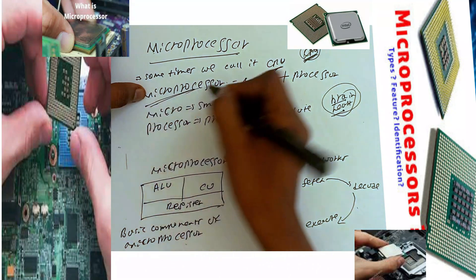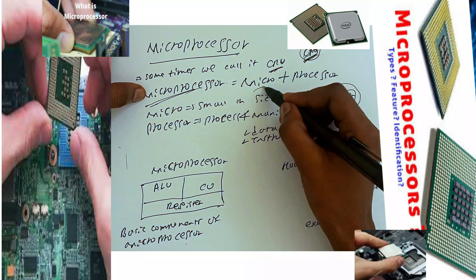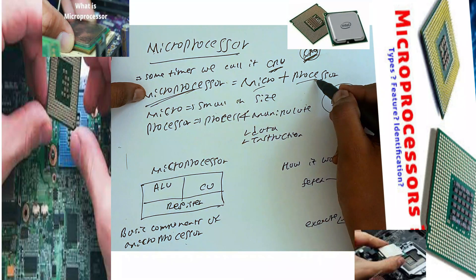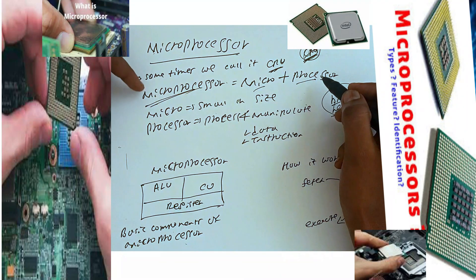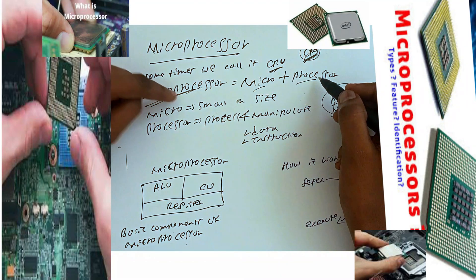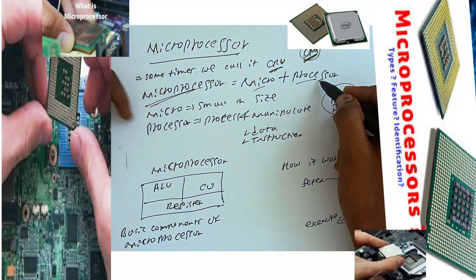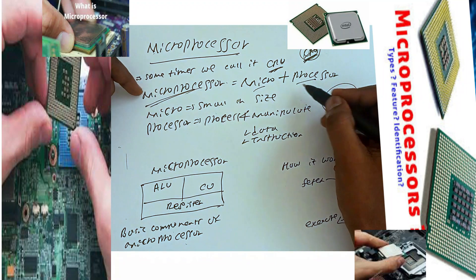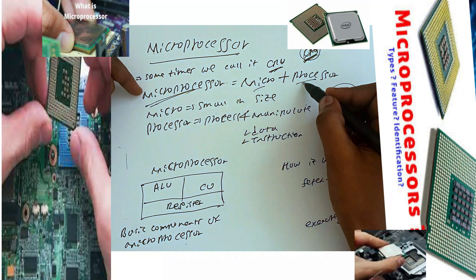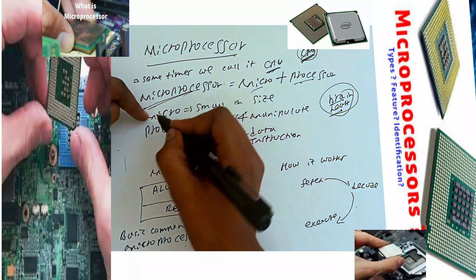A microprocessor is a micro plus processor. The microprocessor is a micro plus processor. So, a microprocessor — a micro plus processor — what is micro itself?